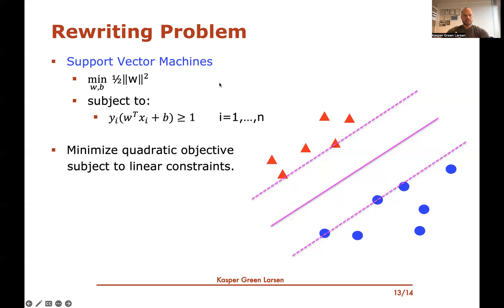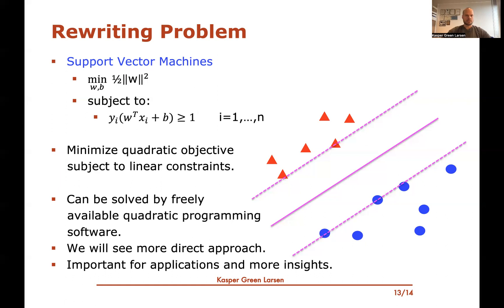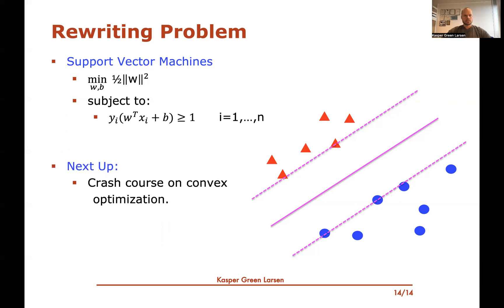We've arrived at an optimization problem minimizing a quadratic objective — the squared norm of w — subject to linear constraints. This kind of quadratic programming problem can be solved by freely available software packages. However, we'll take a more direct approach that exploits the concrete structure of this problem, which will give more insights into support vector machines. Coming up in the next video will be a short crash course on convex optimization, introducing the tools we need to solve this optimization problem.